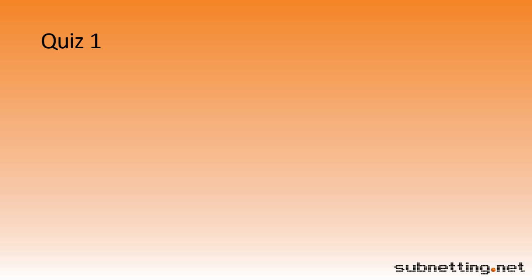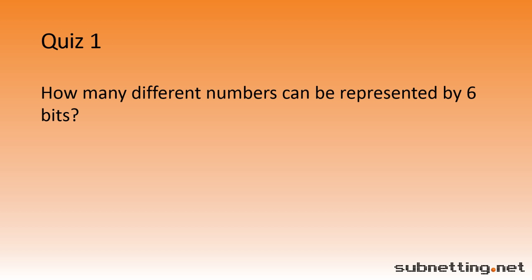Here's a quick quiz. How many different numbers can be represented by six bits? If you need more time, just pause the video. The correct answer is D. Remember the formula is simply two to the nth power. Two to the sixth power equals 64.